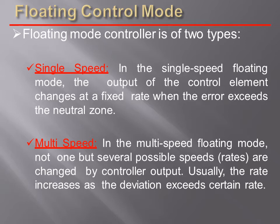In single speed floating mode, the output of the control element changes at a fixed rate when the error exceeds the neutral zone. In the multi-speed floating mode, not one but several possible speeds are changed by the controller output. Usually, the rate increases as the deviation exceeds a certain rate.